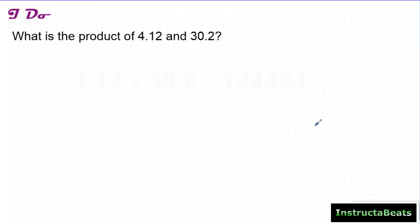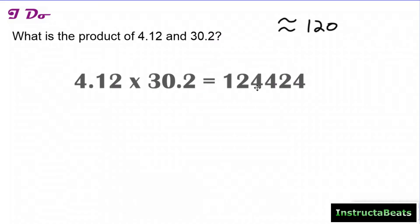Let's go back to the question we just answered: what is the product of four and twelve hundredths and thirty and two tenths? Our estimate was about one hundred twenty. We're not actually going to teach you how to multiply these numbers right now — we're going to give you the digits that would be in your answer. When you multiply four and twelve hundredths times thirty and two tenths, the digits in your product would be one, two, four, four, two, four. Without a decimal, it would be one hundred twenty four thousand four hundred twenty four.